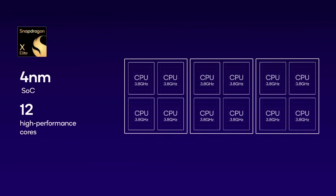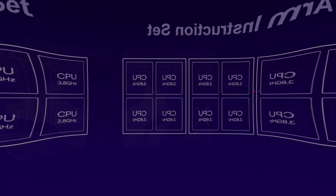Here is how the Snapdragon X Elite looks. It's a 4 nanometer processor — note that Apple's M3 is 3 nanometer — so it's quite interesting that Qualcomm is achieving the levels of performance and efficiency they're claiming at 4 nanometer. It offers 12 high-performance cores with no efficiency cores, and there's no X Elite Pro or X Elite Max — this is what you get: just one model with 12 cores.